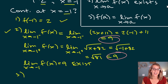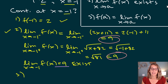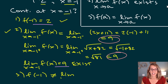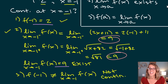For condition three, we've already done the analysis. The limit value is nine, but the function value f(-1) is two. Those are not equal, which means condition three fails. Therefore f of x is not continuous at x = -1.